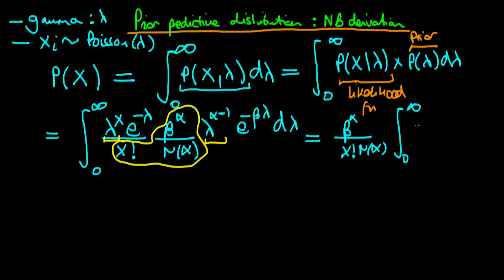So we get lambda to the power x plus alpha minus 1, and for the exponential terms we again add the powers, giving e to the power minus beta plus 1 times lambda, integrated with respect to lambda.